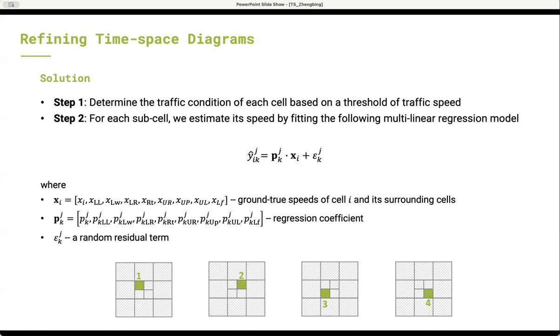Where Xi is ground true speeds of cell i and its surrounding cells, pkj is the regression coefficient. There are four sub-cells for each cell, so we got four regression models in total.